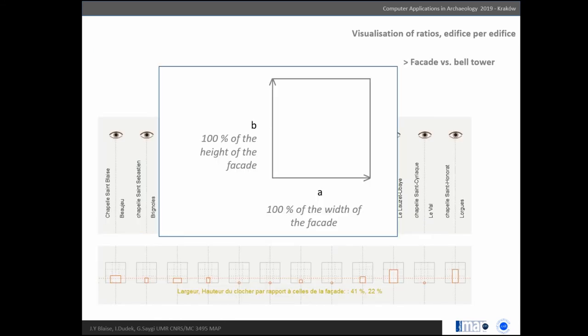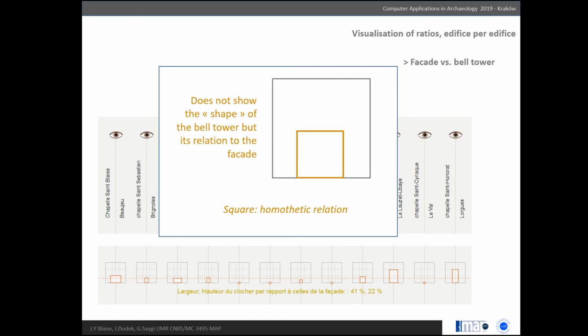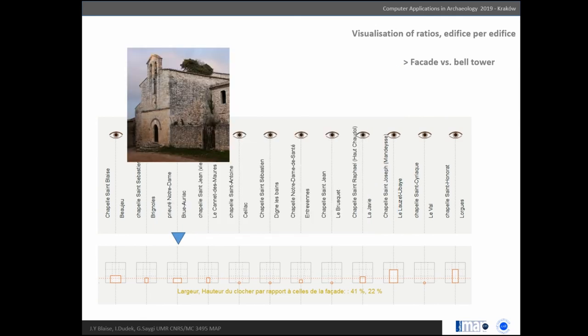Facade versus bell tower: here the square represents 100% of the width of the facade and its height. Then we draw the rectangle representing the bell tower. The width of the bell tower is represented in relation to that of the facade. This doesn't show the shape of the bell tower, only the relation between the two. With a square, you have a homotactic relation. Here you see that this one has a rather flat profile, while this facade is very high. Trends and similarities can be observed.